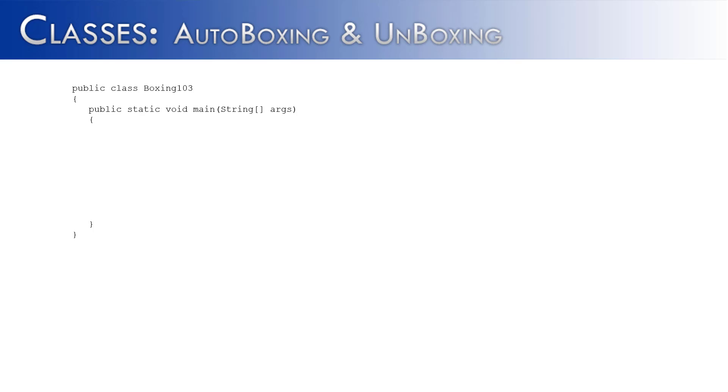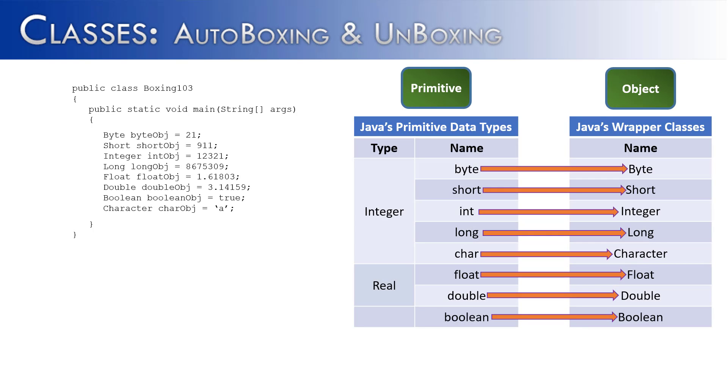So as we've seen, autoboxing applies to the integer class, but it doesn't solely apply to the integer class. In this example, what I've shown is that it applies to all of Java's wrapper classes. All the way from byte to character, it is going to autobox every single one of those.